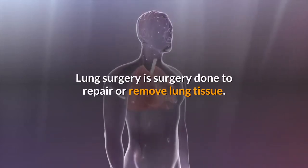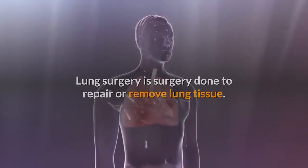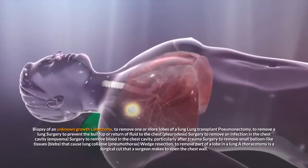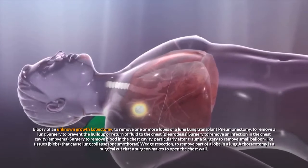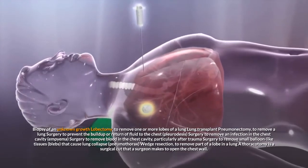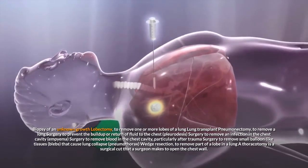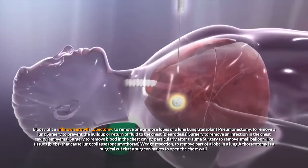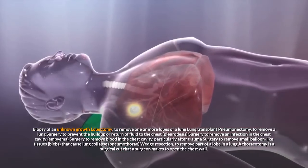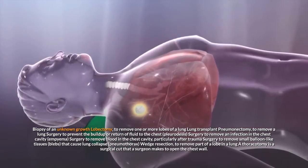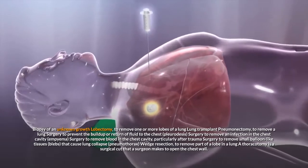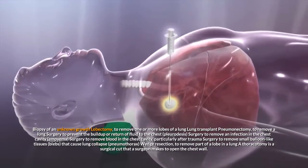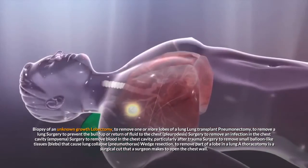Lung surgery is surgery done to repair or remove lung tissue. There are many common lung surgeries including biopsy of an unknown growth, lobectomy to remove one or more lobes of a lung, lung transplant, pneumonectomy to remove a lung, surgery to prevent the build-up or return of fluid to the chest, pleurotesis, surgery to remove an infection in the chest cavity, empyema, surgery to remove blood in the chest cavity particularly after trauma, and surgery to remove small balloon-like tissues called blebs that cause lung collapse, or pneumothorax.